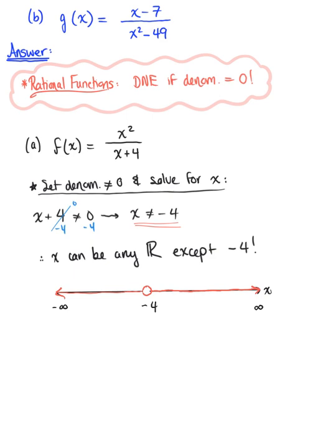From this number line, we're ready to write the interval notation. X is an element of the interval from negative infinity to negative 4 — and because we're excluding negative 4, we use a rounded parenthesis. Then x could be anything greater than negative 4, approaching positive infinity. We have two separate intervals, so we unite them with a union symbol. This is our final answer for part A.